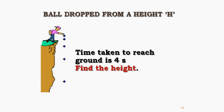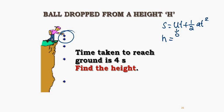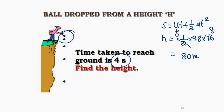A ball is dropped from a height H. The time to reach the ground is 4 seconds. What is the height? The formula is s equals ut plus half g t squared. This is your height H. The initial velocity is zero because it is dropped, not pushed. So H equals half times 9.8 times 4 squared, which gives approximately 80 meters.